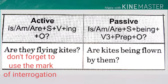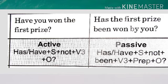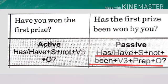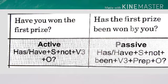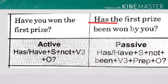Now let's talk about passive voice in present perfect tense, interrogative. 'Have you won the first prize?' The active rule is: has/have + subject + third form of verb + object. When you change it to passive: has/have + subject + been + third form of verb + preposition + object. 'First prize' is singular, so we use 'has.' The answer is: 'Has the first prize been won by you?' Remember: singular vs. plural and the tense are very important to keep in mind.